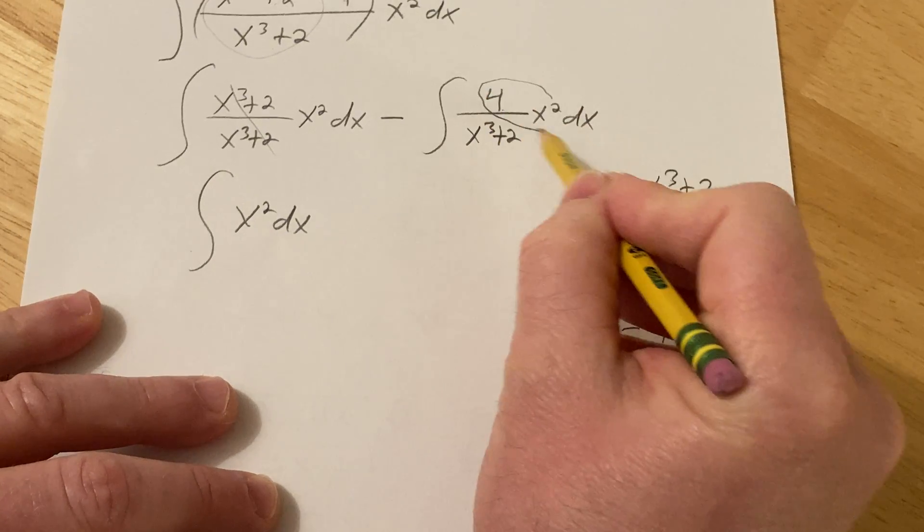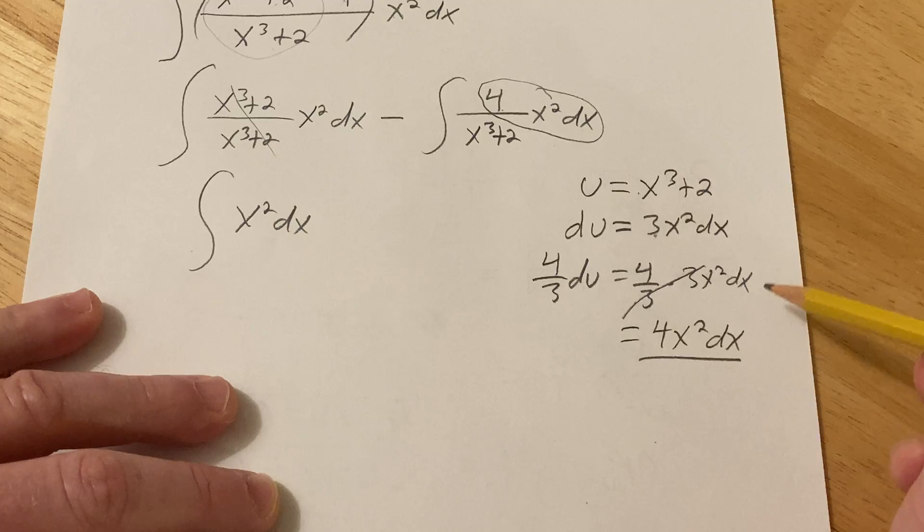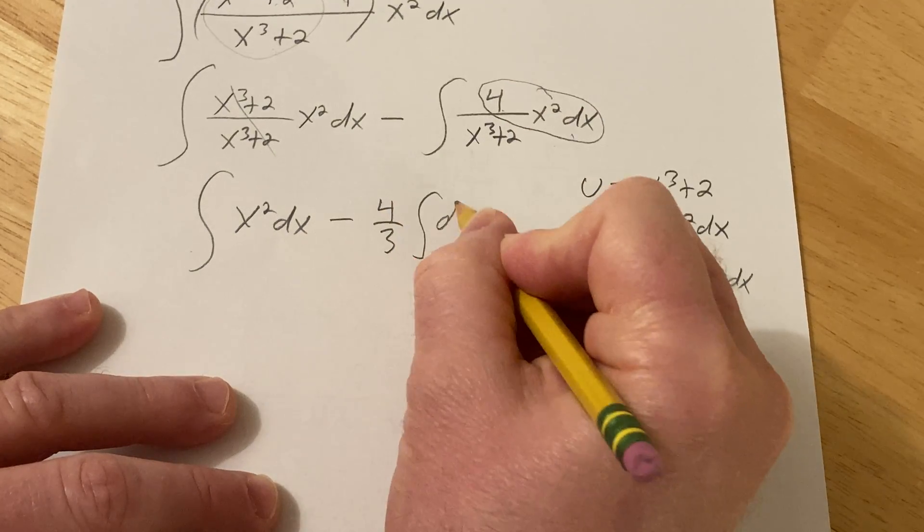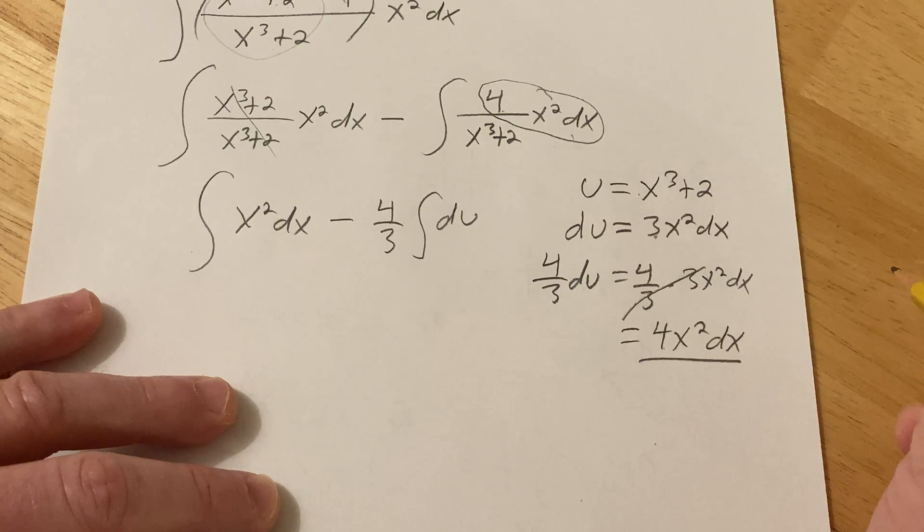Because that's what you want. That's what's here. So now we replace that with 4 thirds du and then on the bottom we just have du.